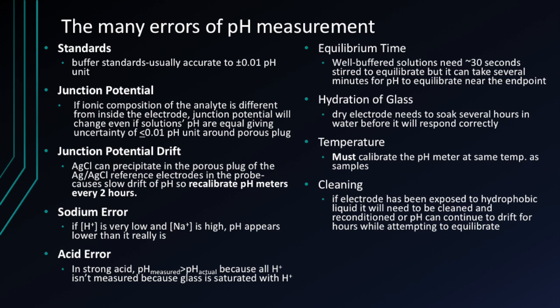There are various causes of error in pH measurement, including the standards, junction potential, junction potential drift, sodium error, acid error, equilibrium time, hydration of glass, temperature, and cleaning. In order to prevent errors from stacking up, it is beneficial to become familiar with these causes and ways to prevent them.